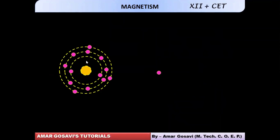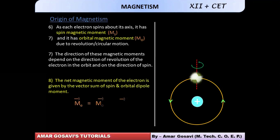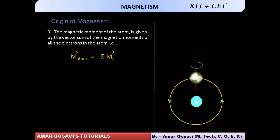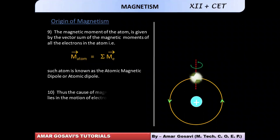These magnetic moments may nullify each other depending upon the directions in which the electrons of an atom are orbiting or spinning. The resultant magnetic moment will be given by the orbital magnetic moment plus the spin magnetic moment — the vector sum of it. And if the resultant magnetic moment exists, then the material has a magnetic dipole moment or atomic dipole.